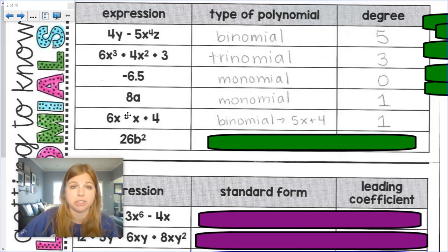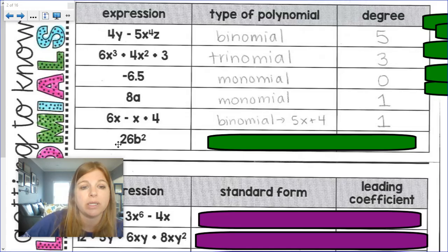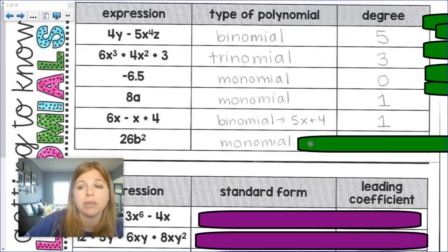Now, this is often the question that students get wrong. They think it's a trinomial. We see three terms, but remember, we always have to check and look to see if we can combine any terms. In this case, we could. Last one, 26b squared. I only see one term here. No pluses, no minuses. So it's a monomial. And my degree would be the exponent of 2.